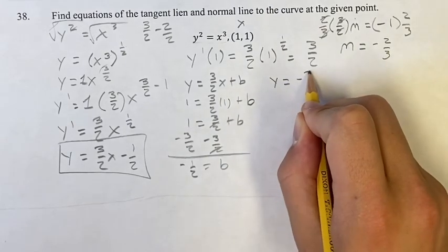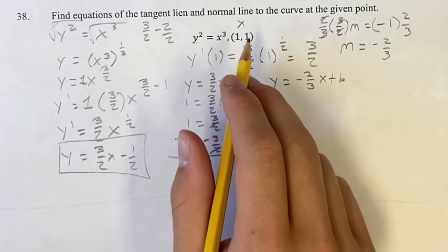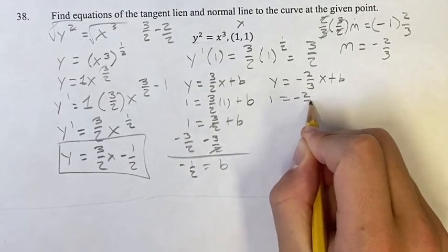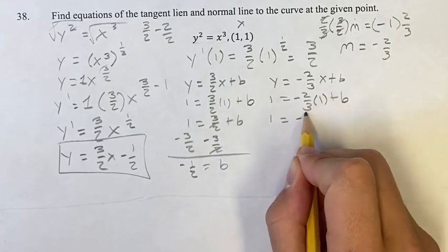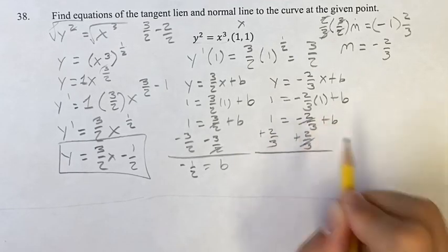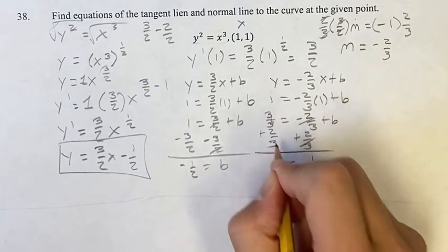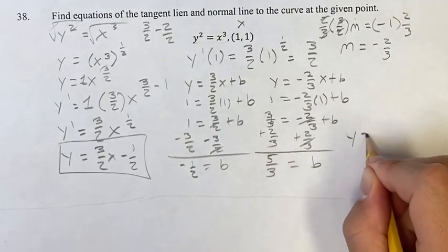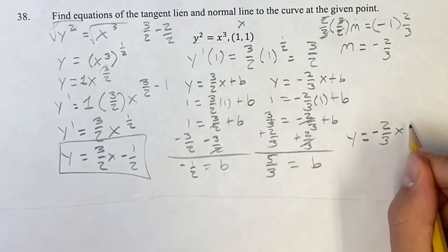So now we have y equals negative two-thirds x plus b. We can do a similar thing, plugging in one for x and one for y, and solving for b. Doing that, you get one equals negative two-thirds times one plus b. One equals negative two-thirds plus b. Adding two-thirds on both sides, these cancel, and we get b equals one, which is three-thirds, plus two-thirds — that's five-thirds. So the equation of the normal line is y equals negative two-thirds x plus five-thirds.